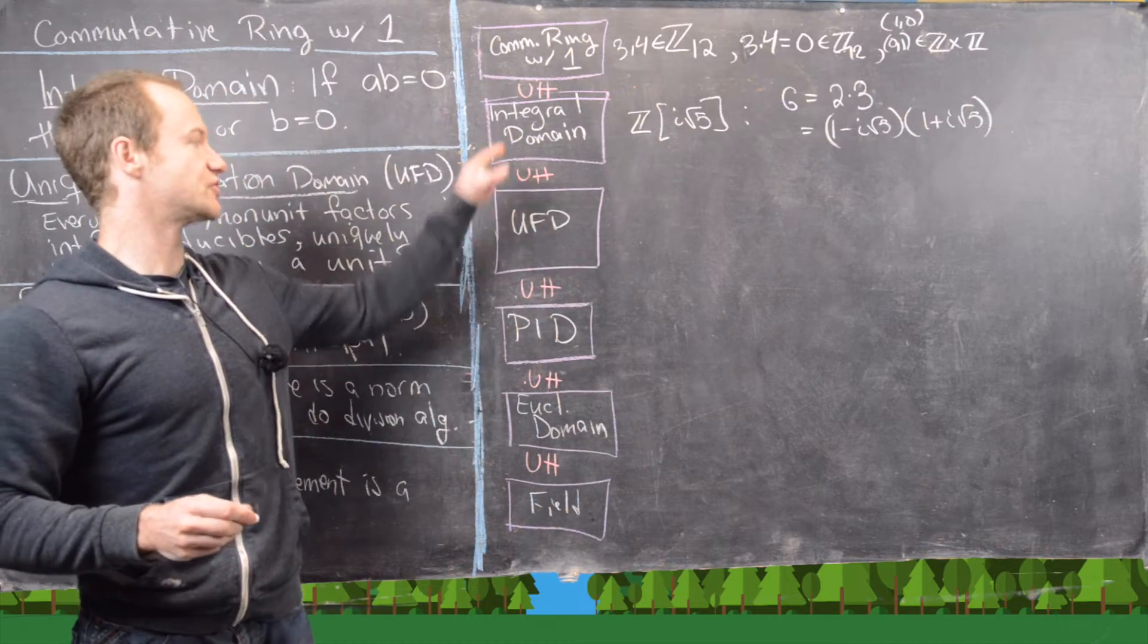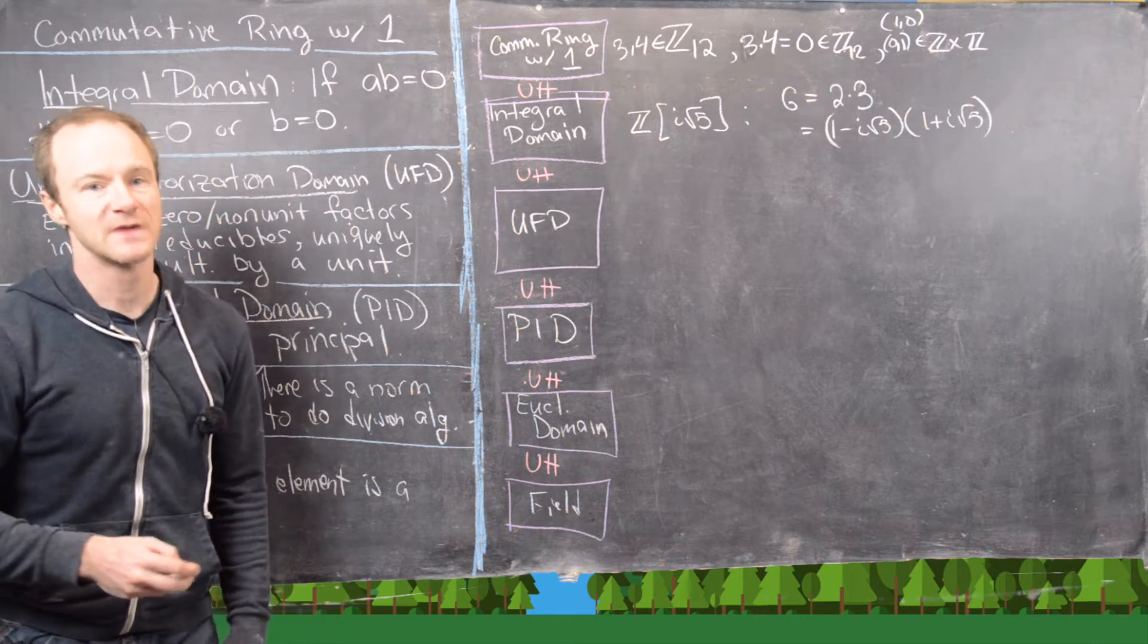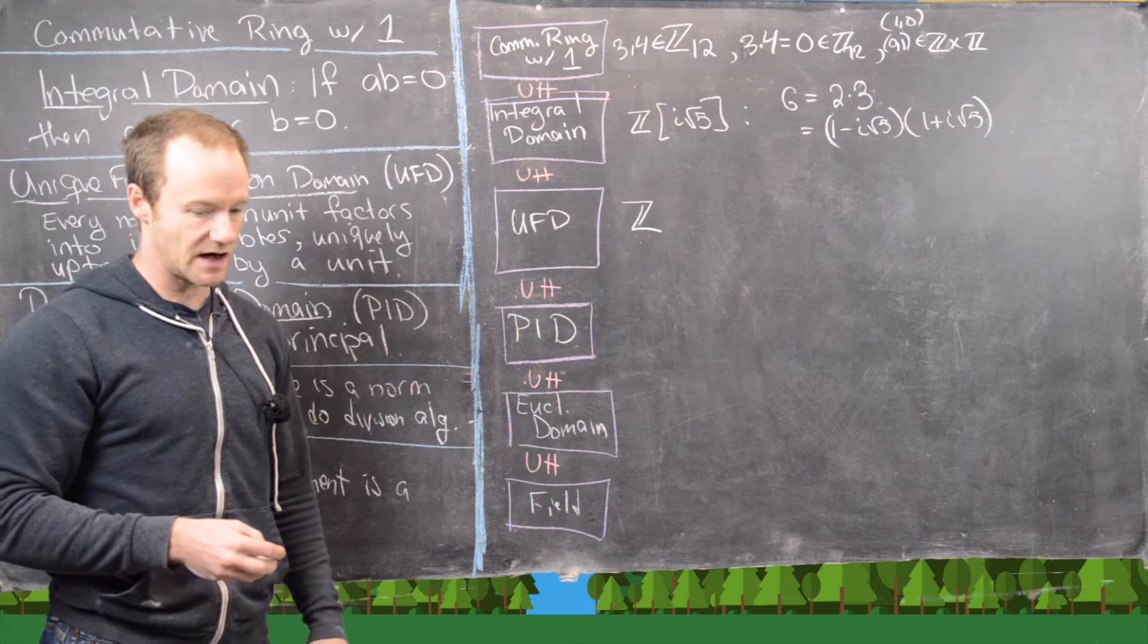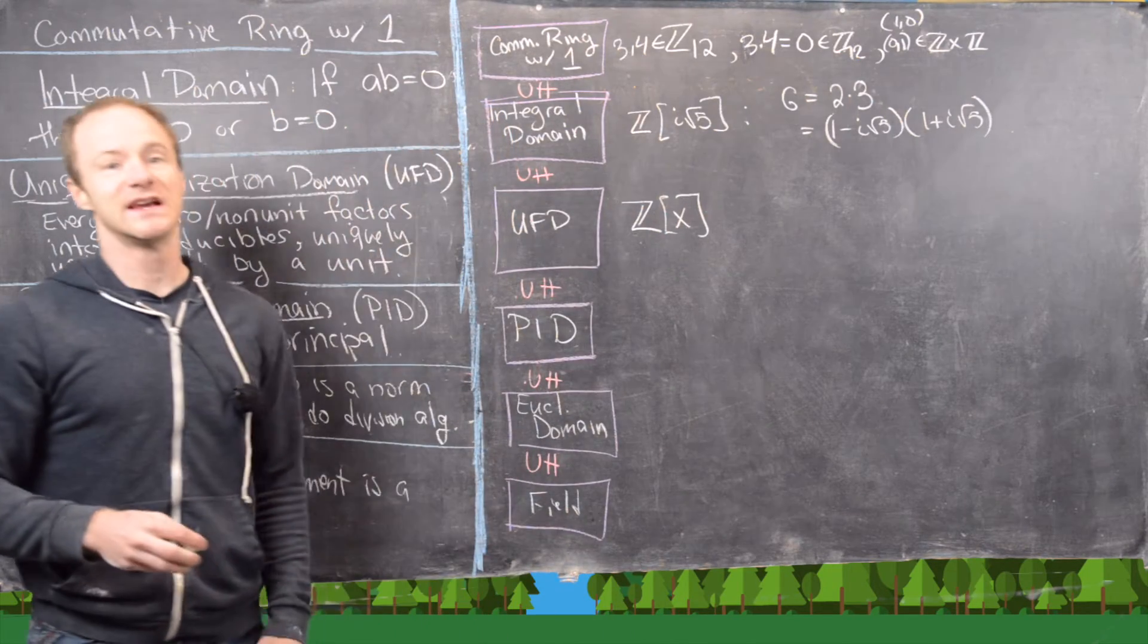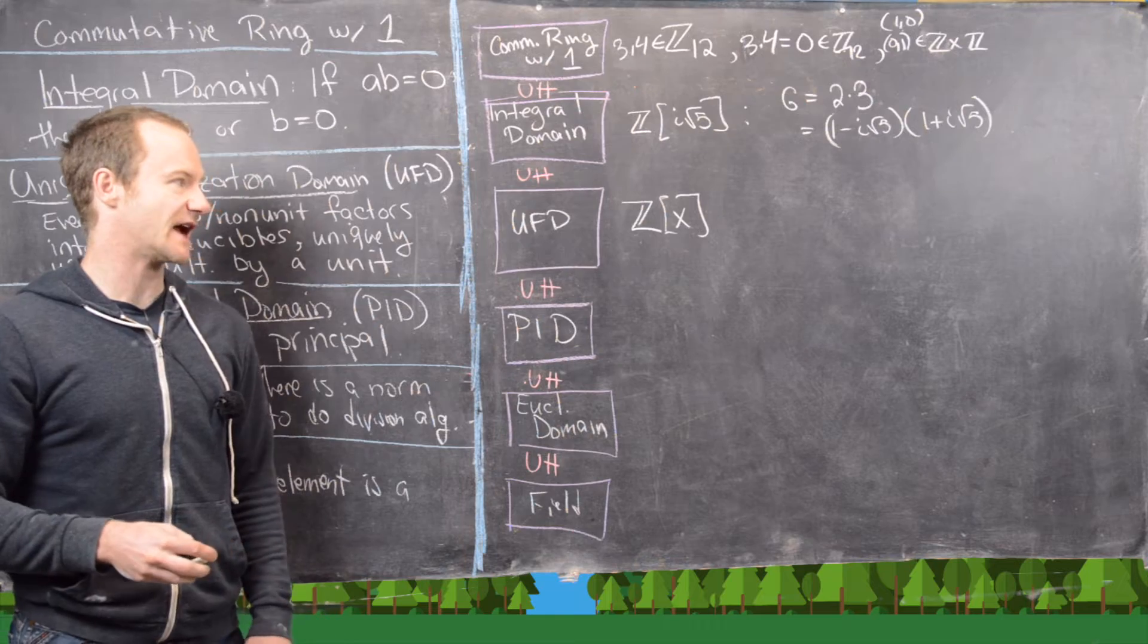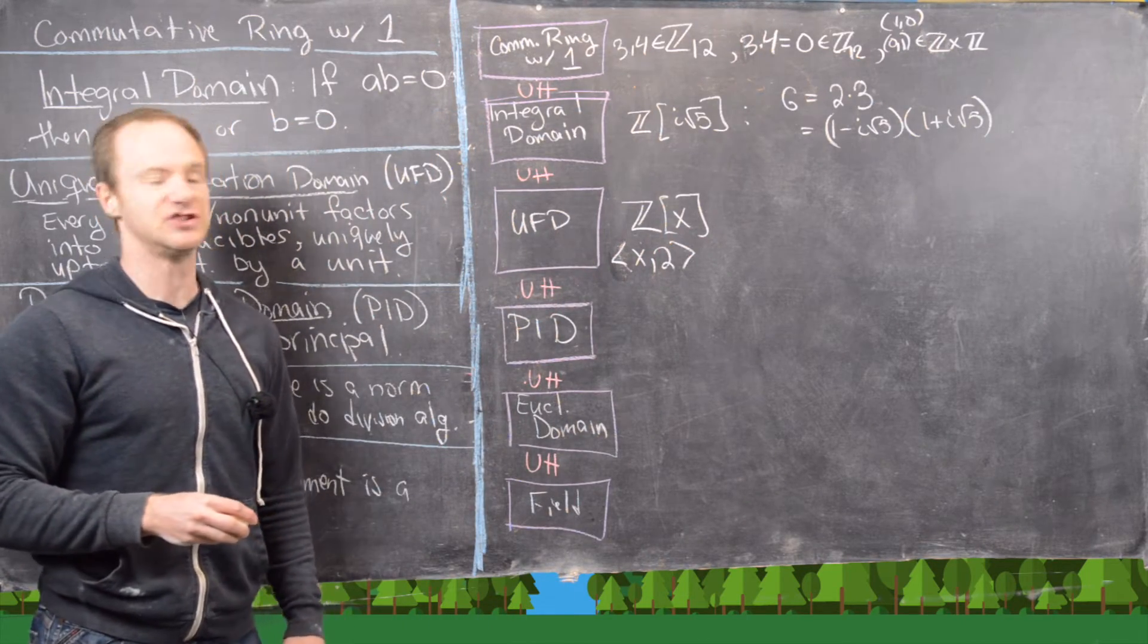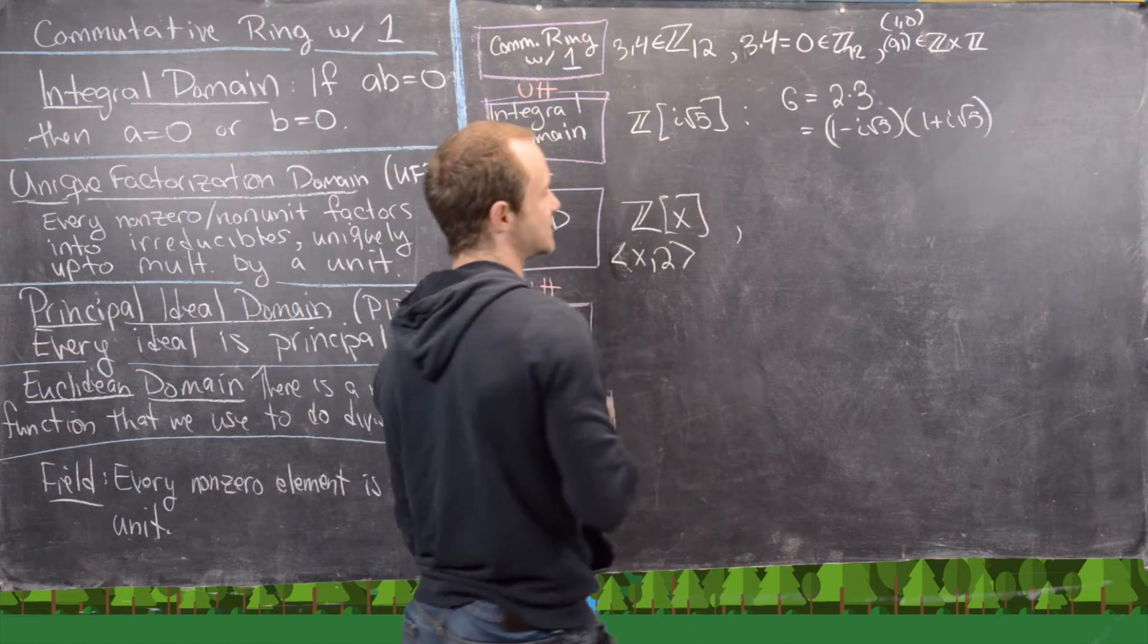There we've got an example of an integral domain which is not a UFD. Now the next thing we want is a UFD which is not a PID. And we can see a couple examples of these. So we know that Z is a UFD. That's easy to see because we have the fundamental theorem of arithmetic. And then we proved earlier that Z adjoined X is also a UFD. So polynomials over a UFD also make a UFD. And then we can think about the ideal generated by X and 2. So this is a non-principle ideal inside of Z adjoined X.